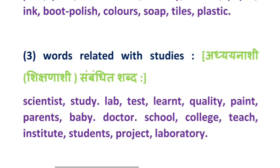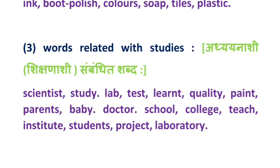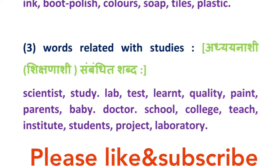Number 3: Words related with studies — aadhyayan aashi, abhyasa aashi, shikshan aashi sammanjit shabda. Aadhyayan aashi koon koon te words aali aahit: scientist, study, lab, test, learnt, quality, paint, parent, baby, doctor, school, college, teach, institute, students, project, laboratory.